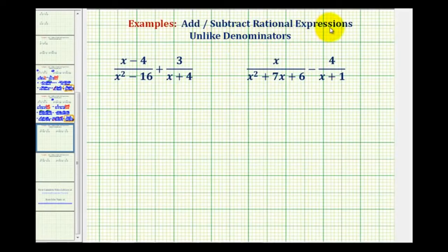To add or subtract rational expressions, we must have the same or like denominators. As soon as we recognize that we don't have like denominators, the first step is going to be to factor the denominators.